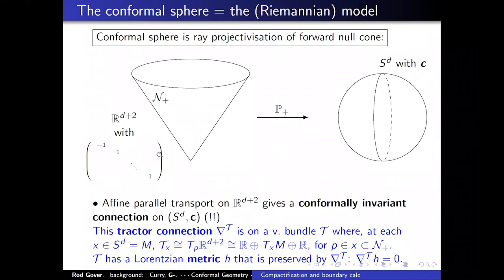Moreover, there's a metric on the tractor bundle: the ambient Lorentzian dot product gives a way of dotting together such vectors, and it's easy to see it descends under this map to a metric on this bundle — and it's parallel because of how it's defined. So we easily get a Lorentzian-signature metric on this vector bundle on the sphere, and the vector bundle has rank D plus two. It also has a composition series because inside the tangent space to R^{D+2} you have the tangent space to the cone, and inside that you have the vertical direction — giving a composition series indicated by a direct sum.